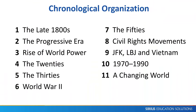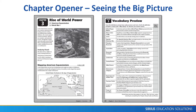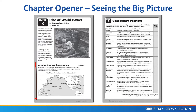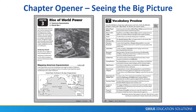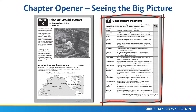The workbook is organized chronologically by era with 11 chapters, and each chapter is divided into two or three lessons. Each chapter begins with a representative image for that era along with a social studies skill involving a graphic organizer. The second page provides key terms in the chapter that students need to know.